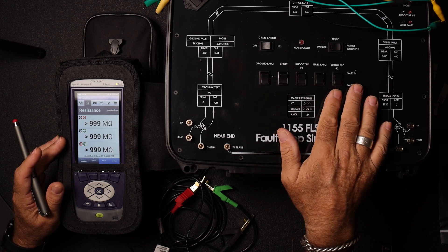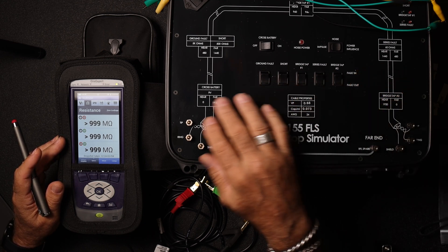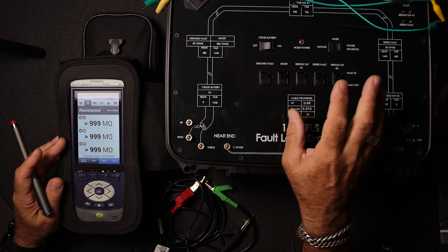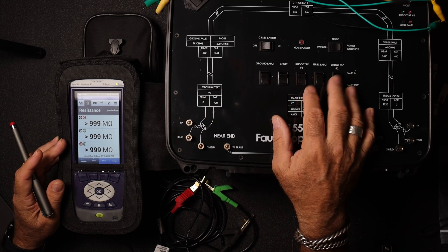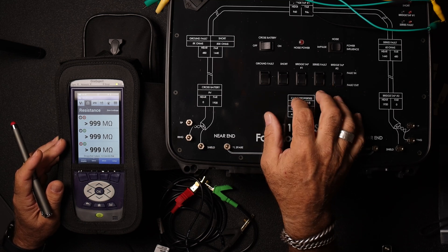This guy here is what we bring out to on-site training for copper testing and DSL installation and testing. We can put all kinds of ground faults, shorts, bridge taps, series faults, noise, power influence, all the typical things that we would see and some of the atypical things we would see in our outside plant. This is a really cool thing for our on-site testing and training.